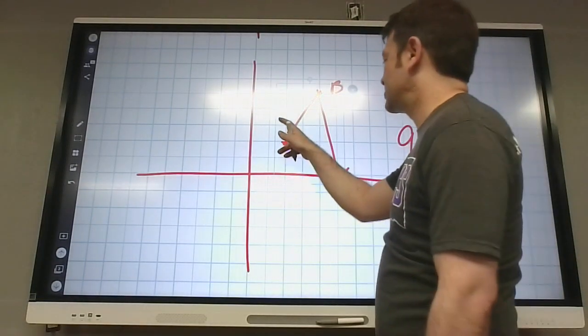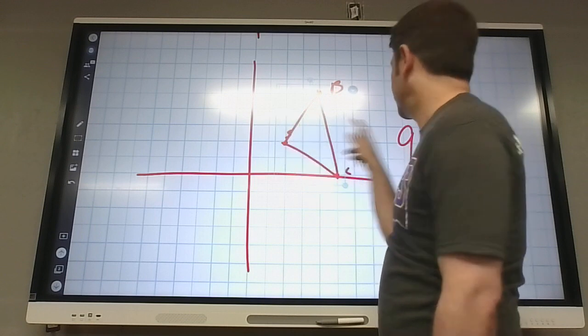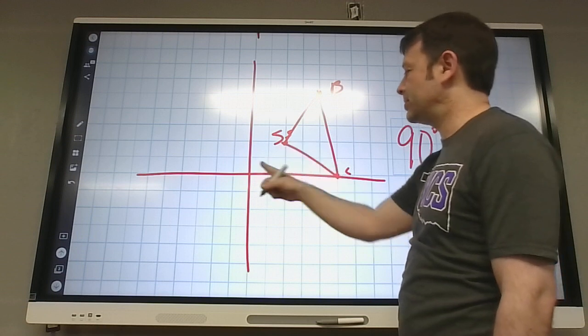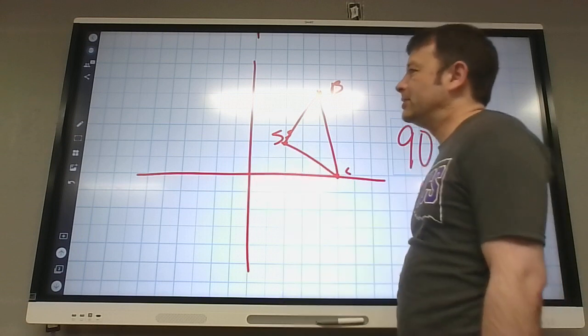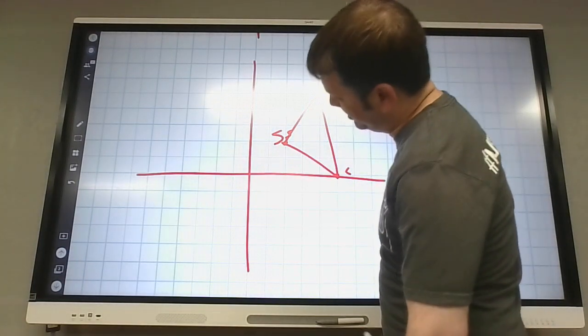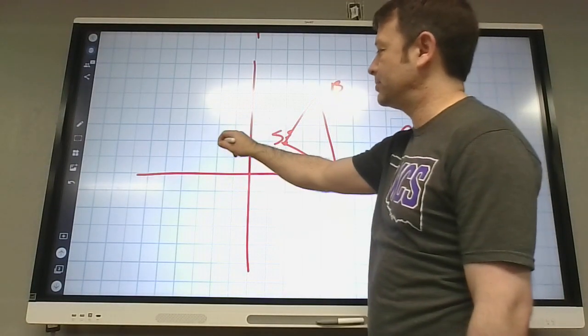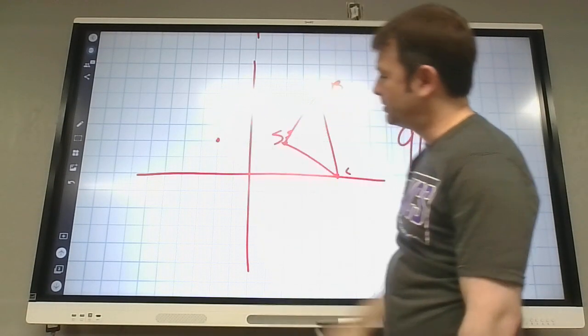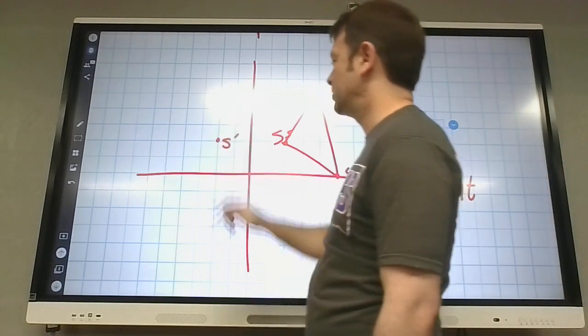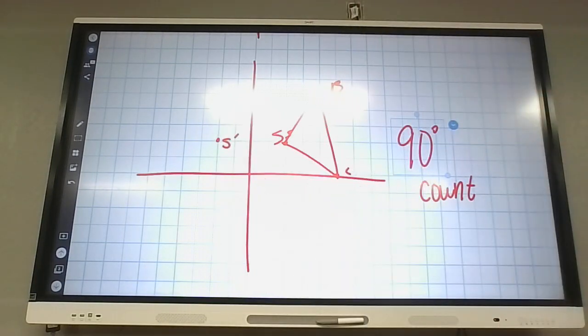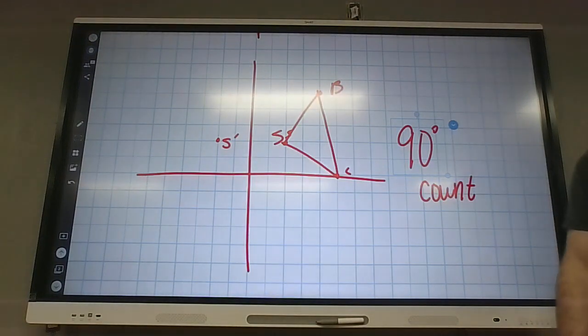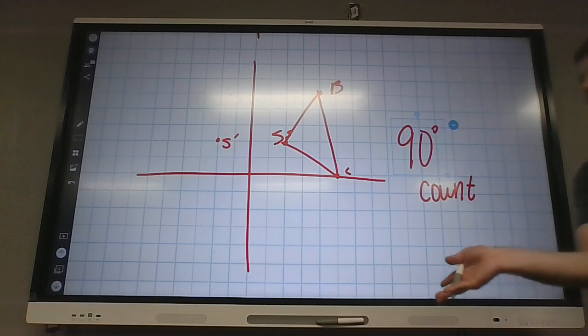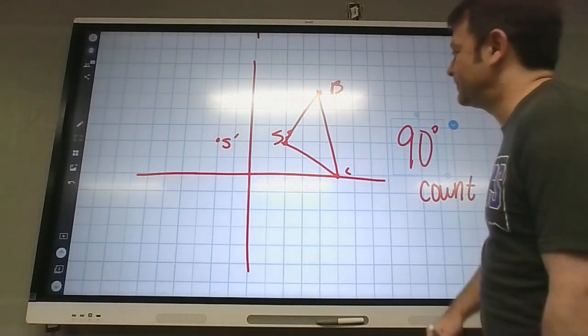So S is at 2, 2. So it's like right 2 and up 2. If I turn my head 90 degrees counterclockwise, it should be right 2 and up 2. Does that make sense? So that's S prime. You could turn your head 90 degrees counterclockwise, or you could just turn your paper like 90 degrees clockwise. If that makes sense. Instead of turning your head, maybe not. Okay.